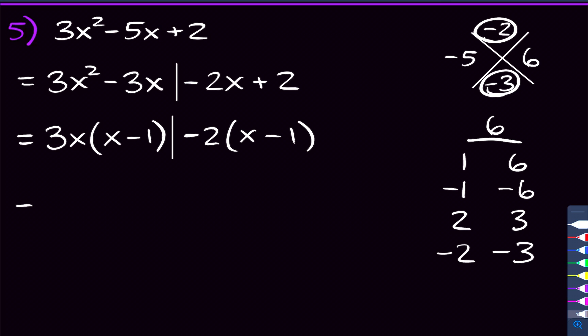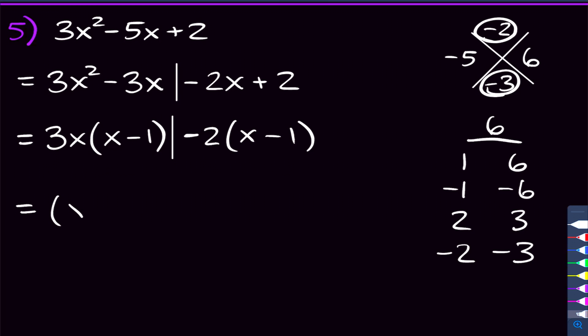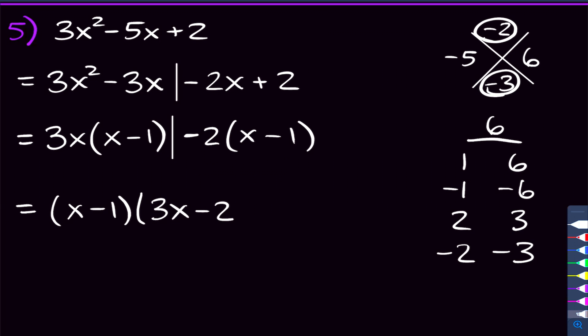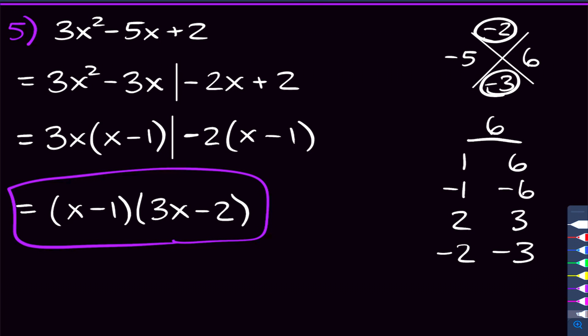Now both groups have x minus 1, so we factor that out. We get x minus 1 times — from the first group we're left with 3x, and from the second group we're left with negative 2. So our answer for problem 5 is x minus 1 times 3x minus 2.